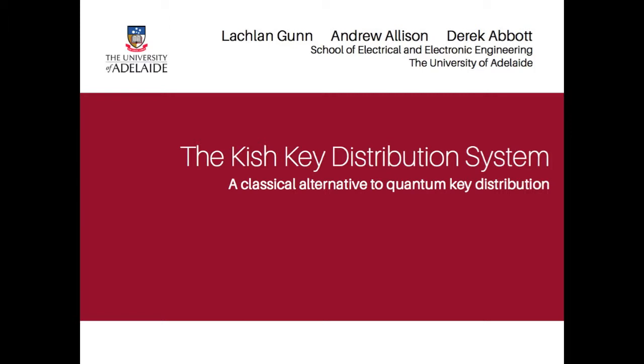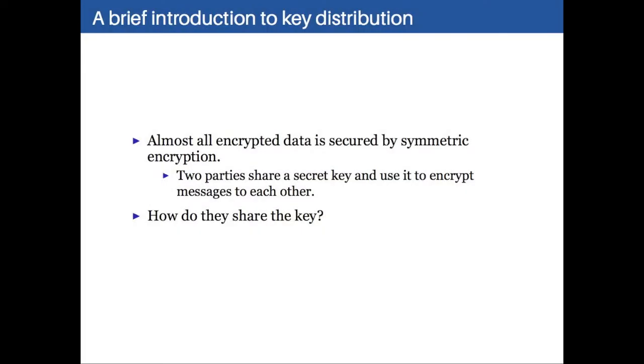All right, thanks Derek. So I'm going to talk about a key distribution method called the Kish key distribution system. Almost all encrypted data now uses what's called symmetric encryption. This is the old-fashioned style of cryptography, where you and someone else have this secret key, and you can take your cipher wheel or whatever it is you're using, and you take your message and turn the wheels to each other, and you turn one letter into another letter, and you need to know that special key to turn them back. So the two parties need to have a secret key. But the problem is, how do you agree on that secret key? You have to send it to each other or otherwise agree on it.